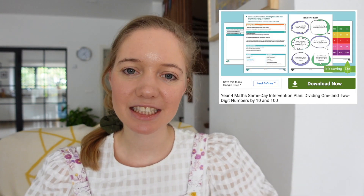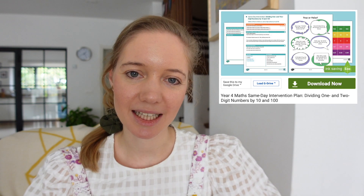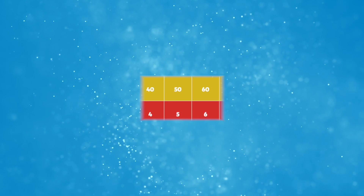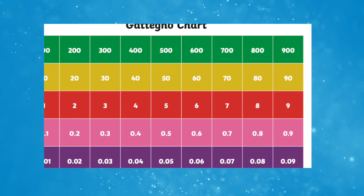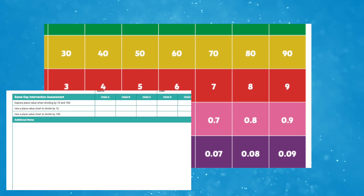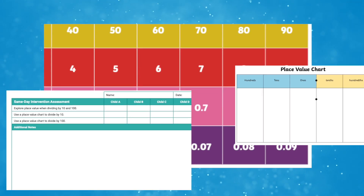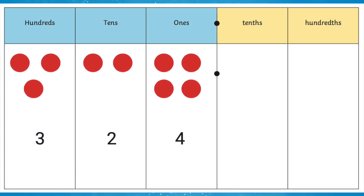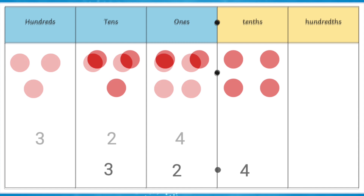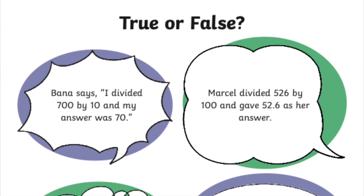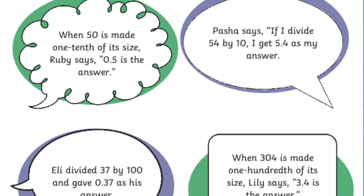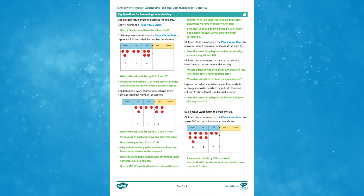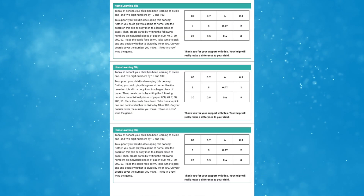Finally, this Year 4 Maths Same Day Intervention on dividing 1 and 2 digit numbers by 10 and 100 is an ideal way to support children who are finding this concept difficult. Using a variety of visual aids and practical activities, it provides a step-by-step guide to ensure children understand how numbers change when they are divided by 10 and 100, and are made one-tenth or one-hundredth of the size. Children will use place value charts and counters to practically divide numbers by 10 and 100, including decimal number answers. Also included is a fun game that will engage children and consolidate their learning. This resource includes an easy-to-follow intervention plan, a set of printable resources, and a home learning task to share with parents.